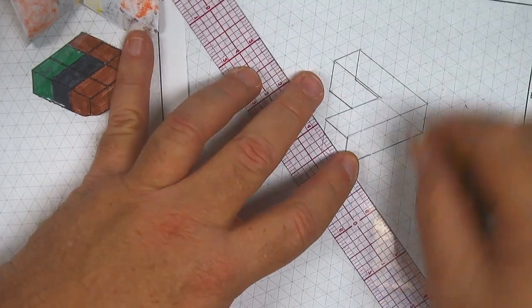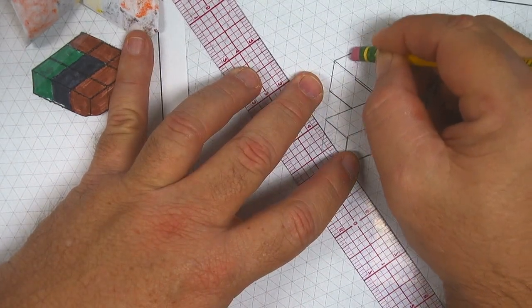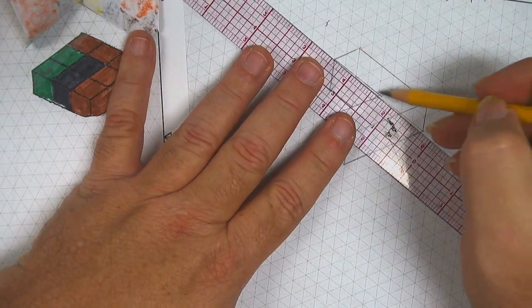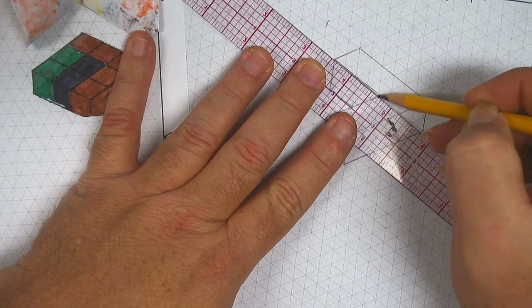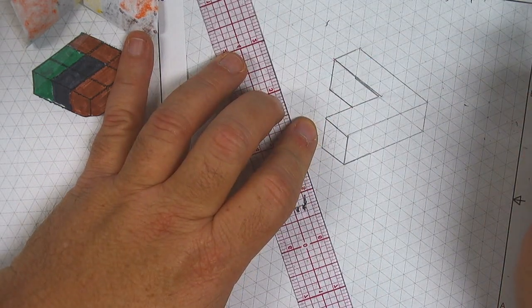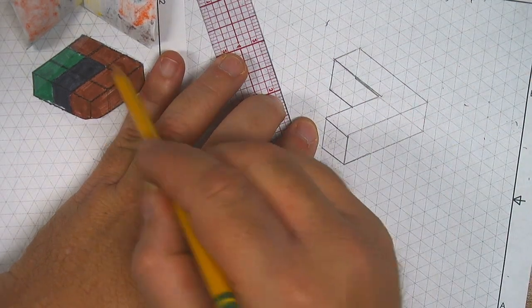All right, now I can erase this because this is a 3D model and we don't actually see that in real life. I need to clean up my lines here a little bit. So now we see the bottom of that shape, this right here.